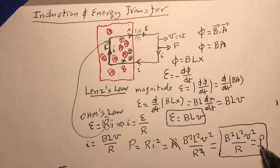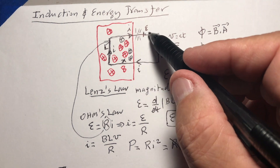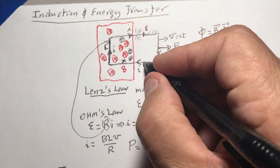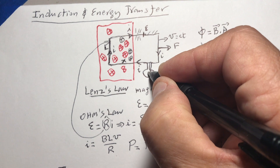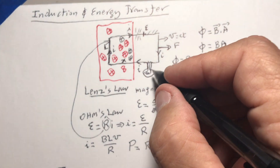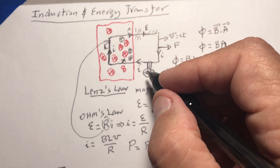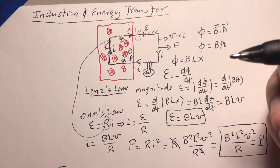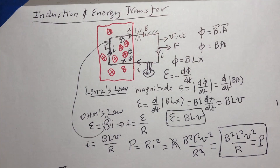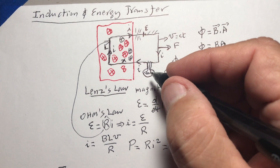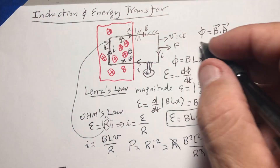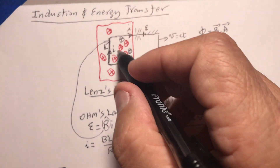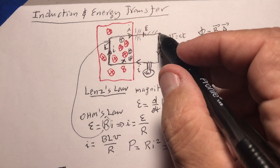This power is the energy per unit time from the wire. For example, if you connect a light bulb to this loop and pull it through the magnetic field, the light bulb will shine. Whether you pull it out or push it back, the light keeps shining — because a changing flux generates a current either way.